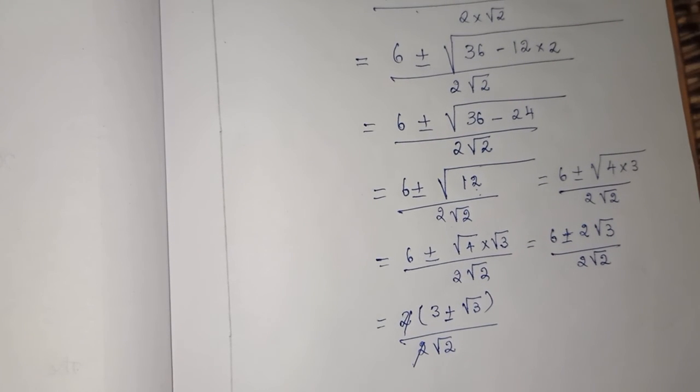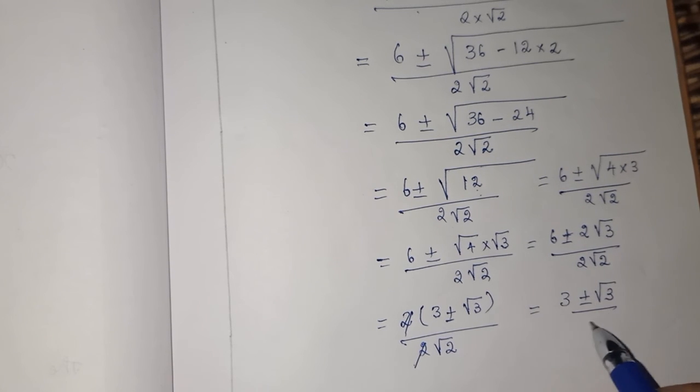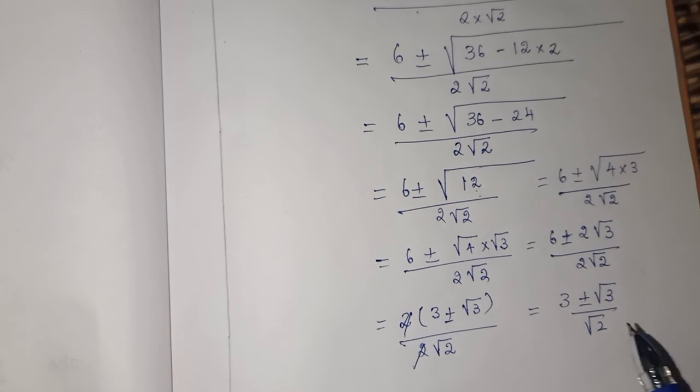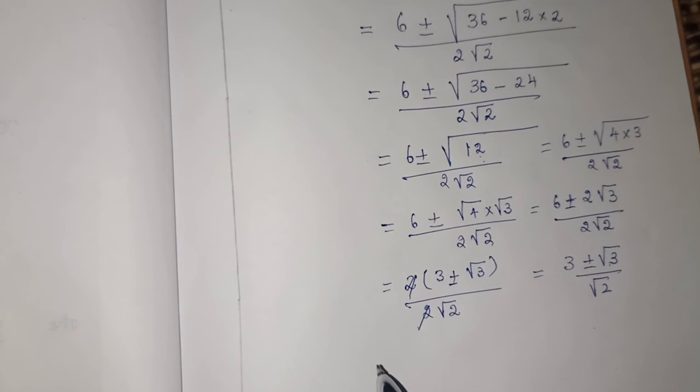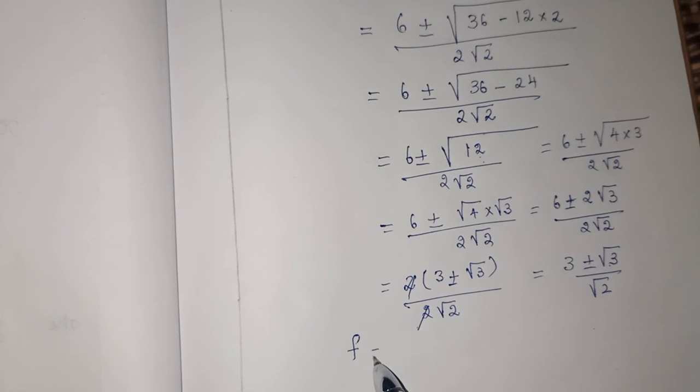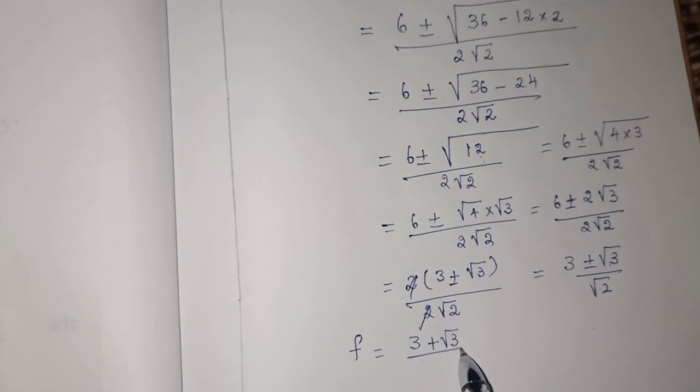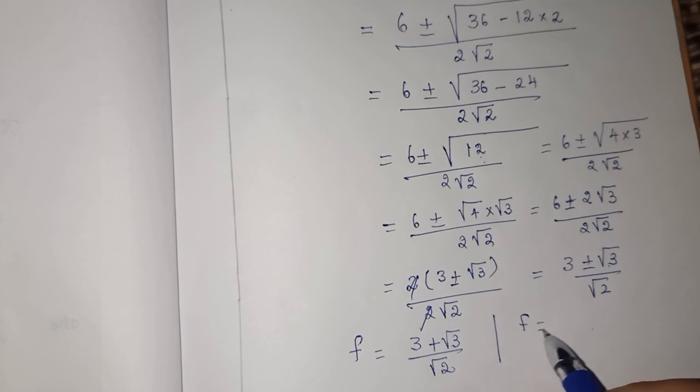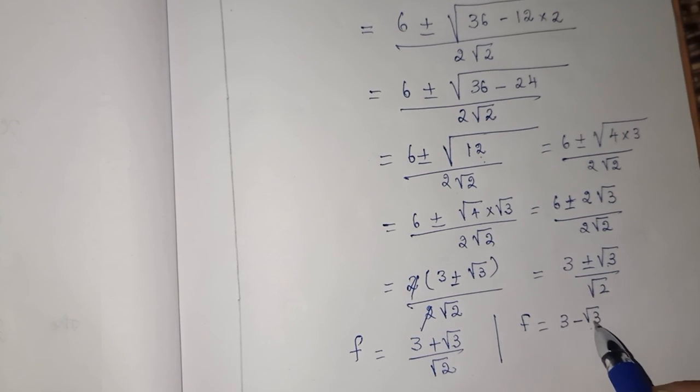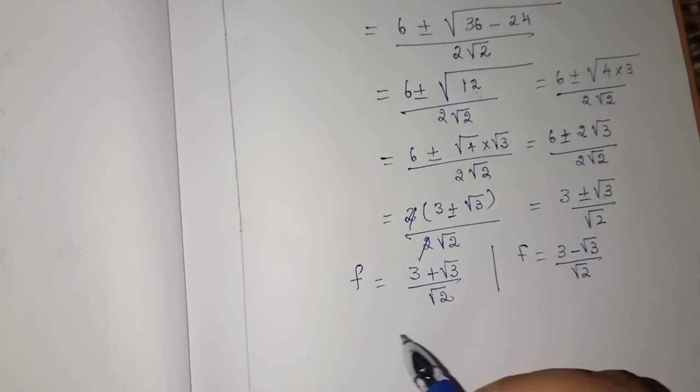This 2 and 2 can be cancelled. What we have remaining is (3 ± √3)/√2. That's all. We cannot simplify further. We have 3 + √3 and 3 - √3. √3 is an irrational number. Now, the first f value is (3 + √3)/√2. Next f value is (3 - √3)/√2.